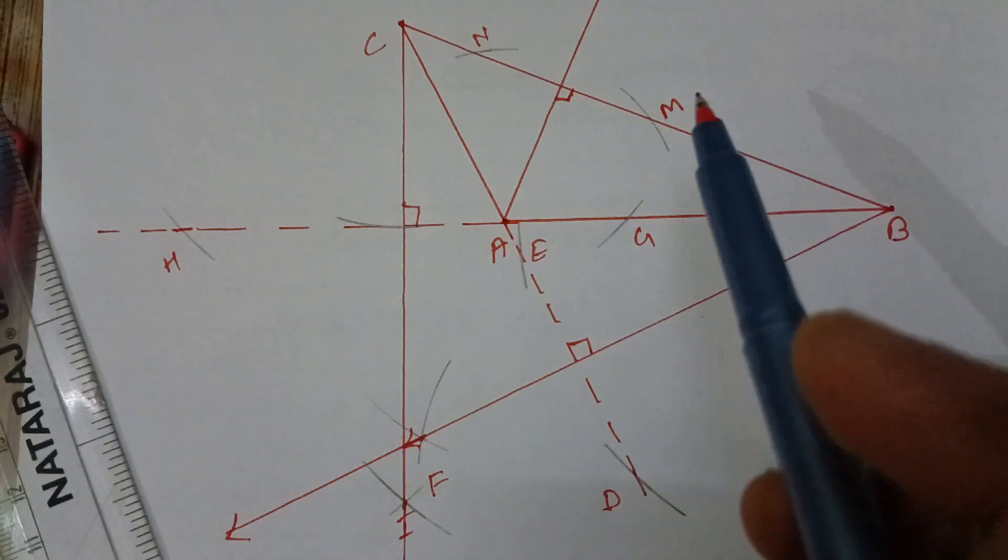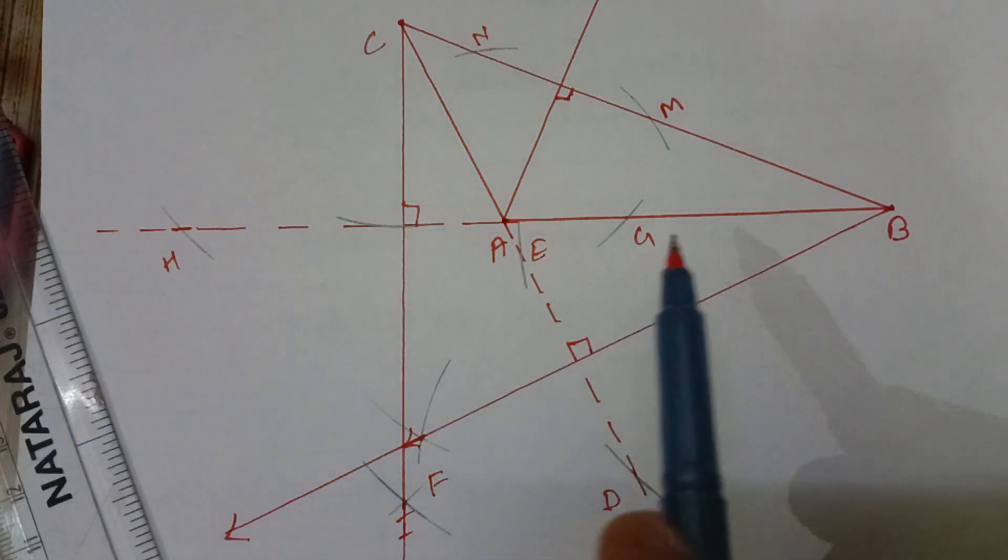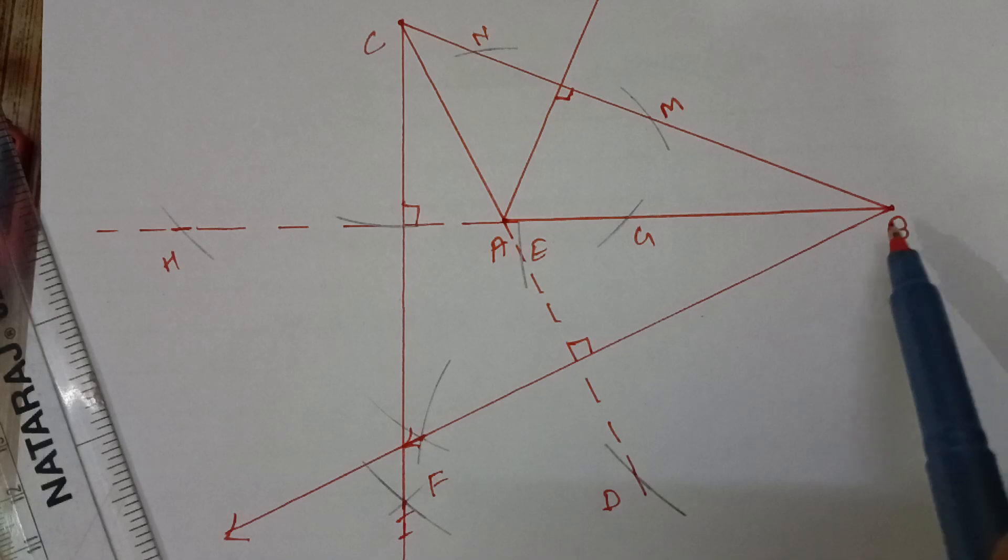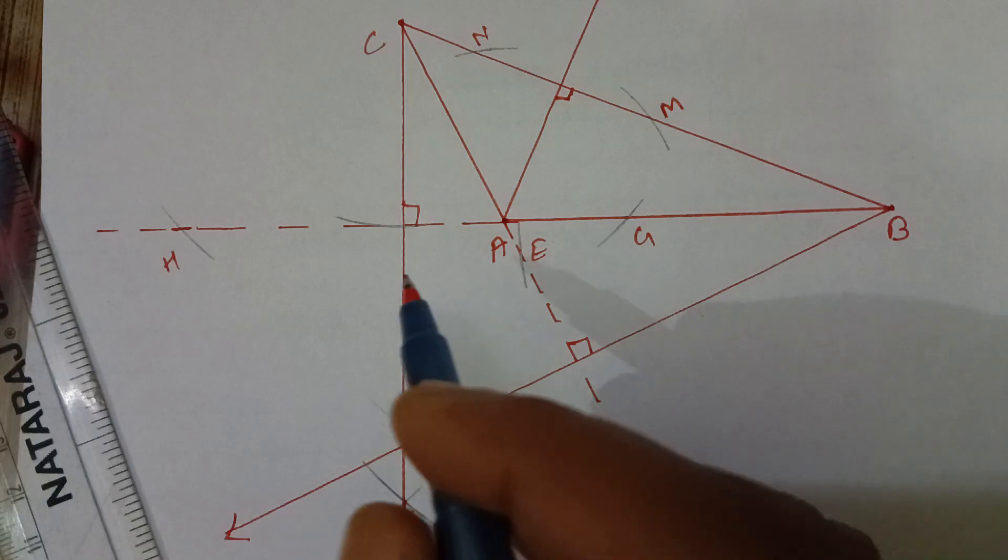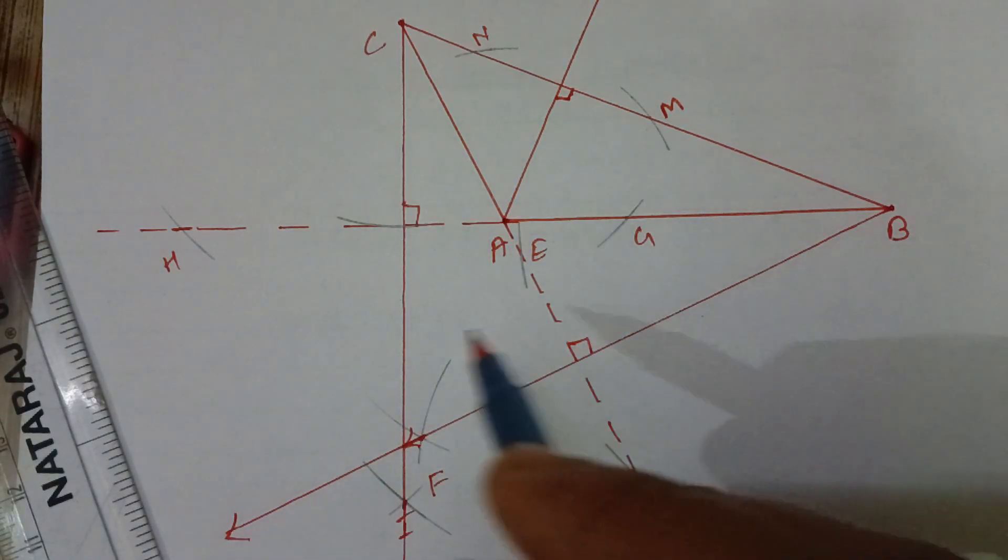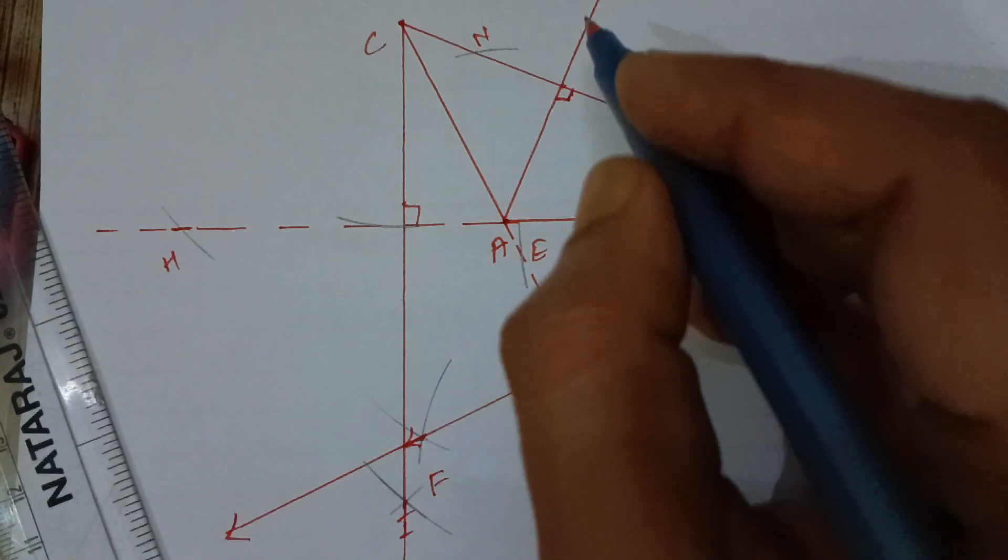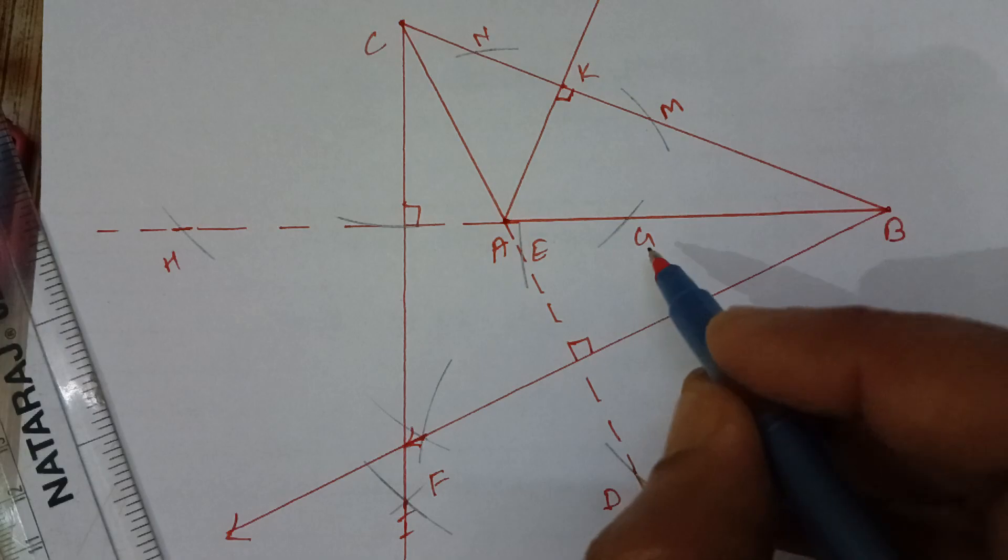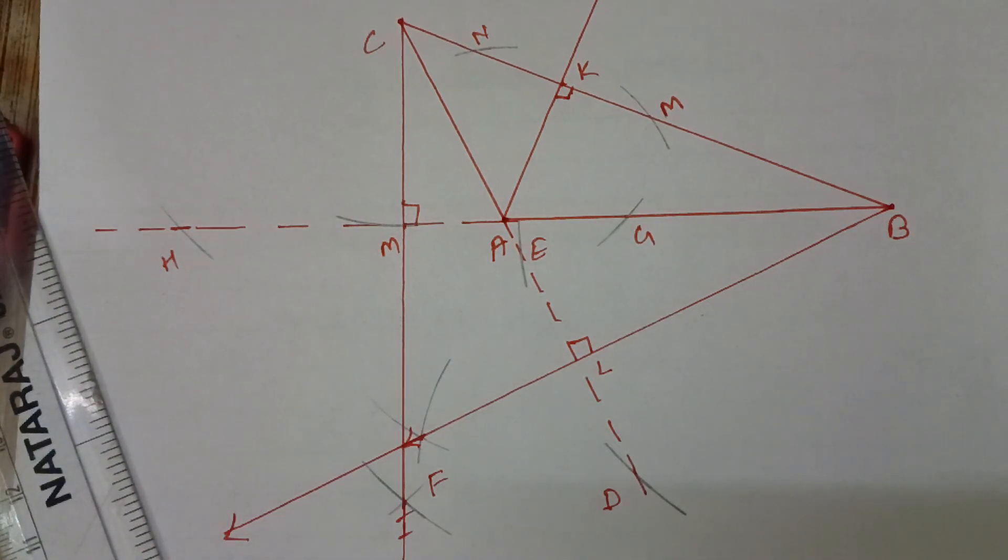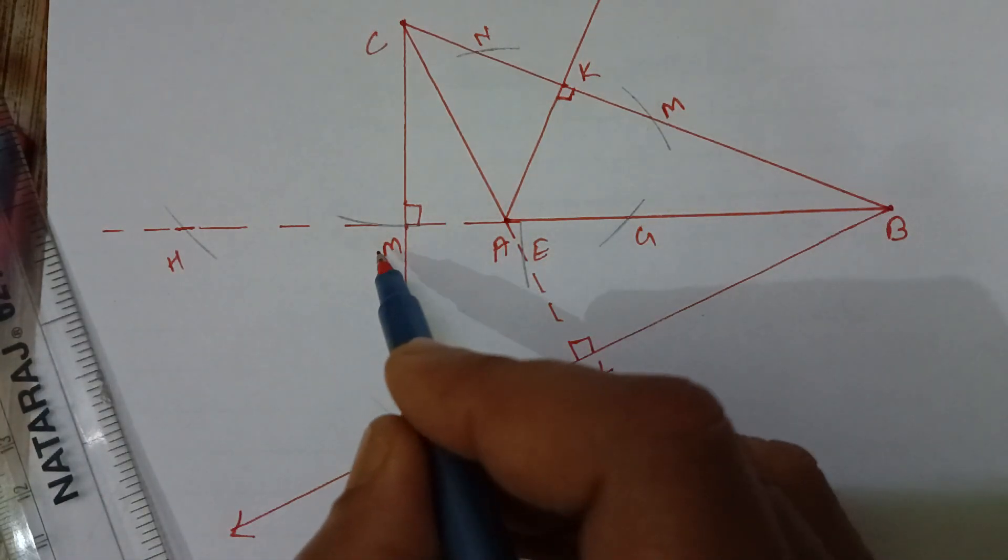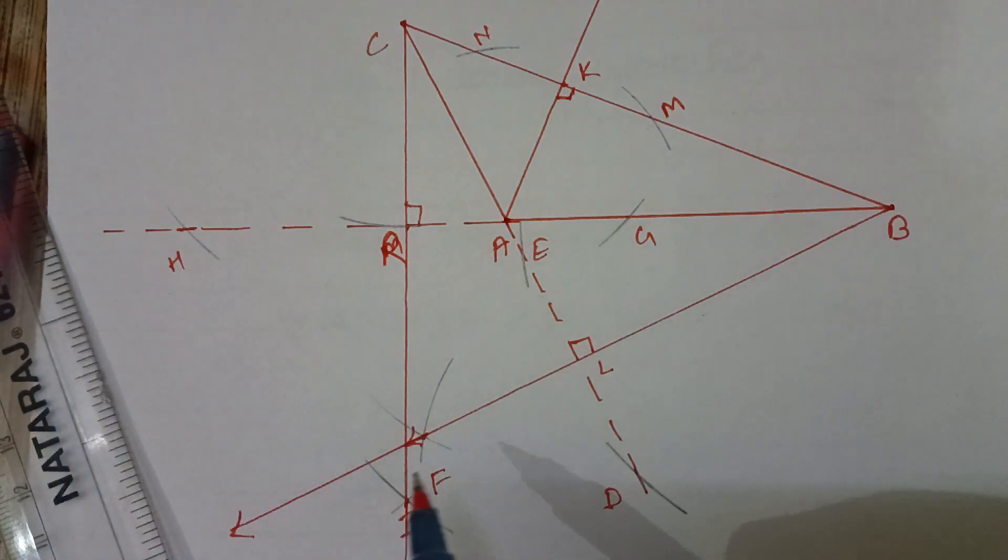So, you can see all the three altitudes. From A, P on side BC, from B, F on AC and C to I on AB. You can give the name here also, that is K, L and M point. Now, M already given to here, then you can take R.